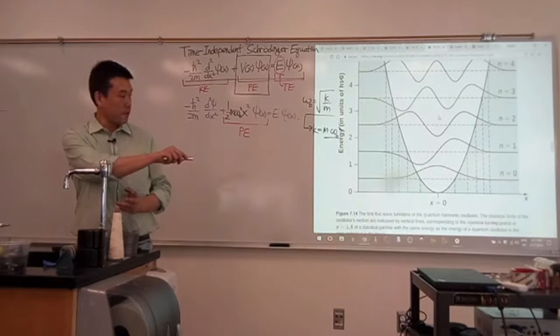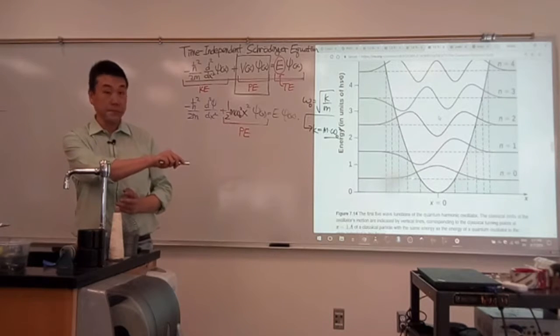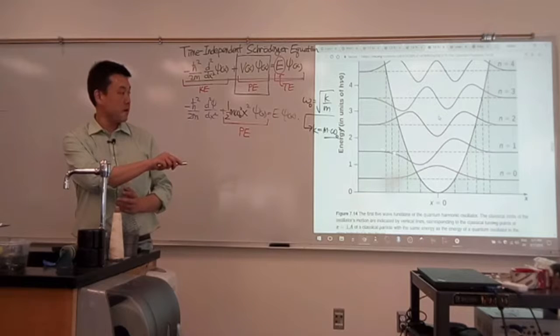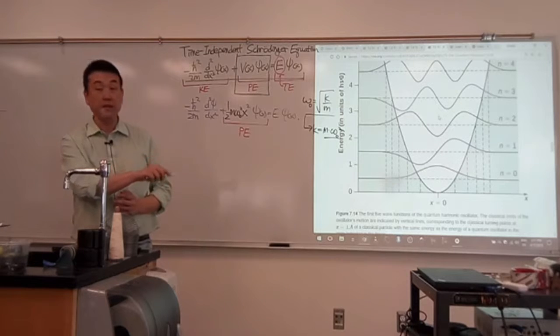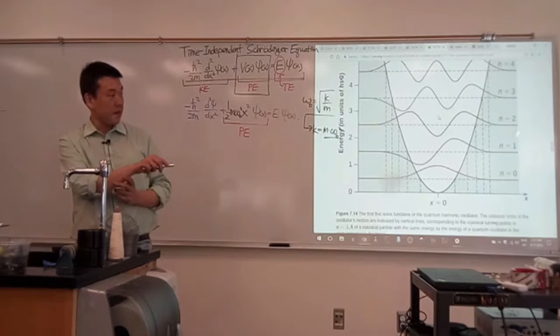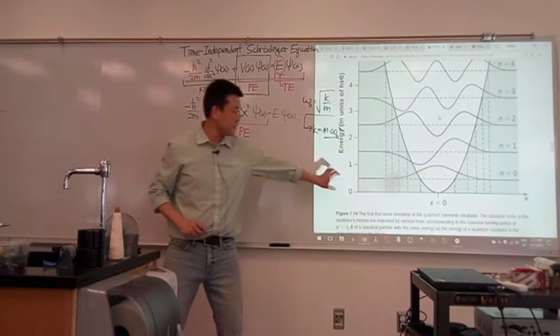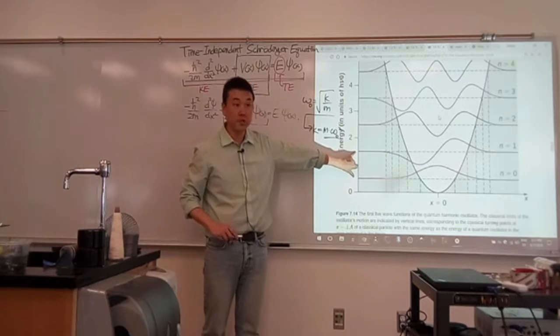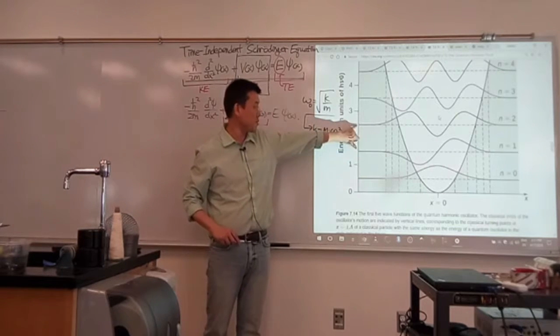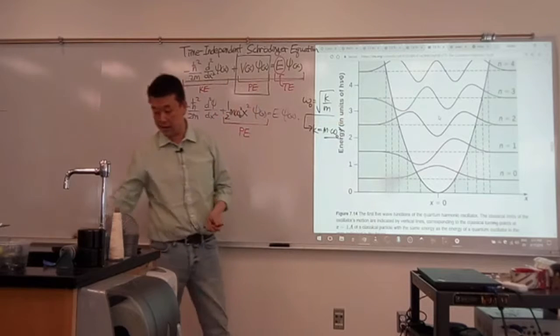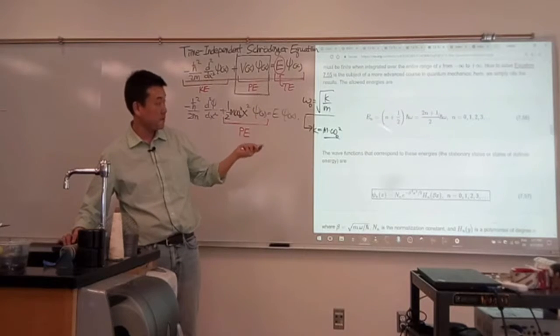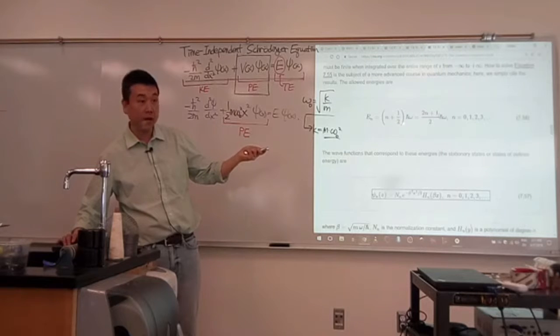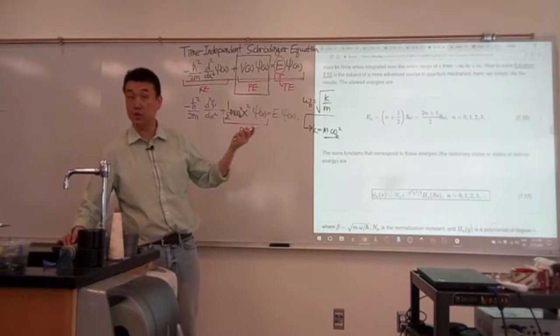This is the lowest energy state, N equals zero. This is the next high energy state, N equals one. This is N equals two. These are actually drawn to scale. This is one half, one whole unit of h-bar omega, next two whole units of h-bar omega, following those energy levels given up here, starting with one half h-bar omega and increasing by an integer each time.